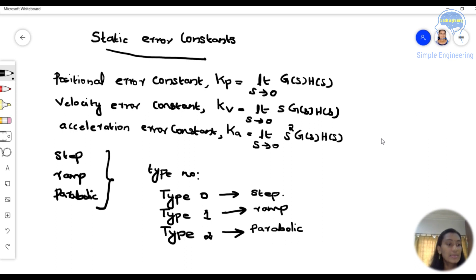So we can tell that type 0, type 1, type 2. According to this, static error constant we can tell.